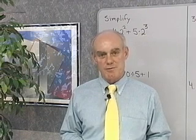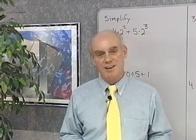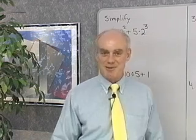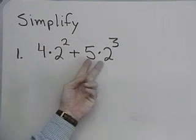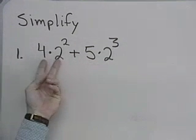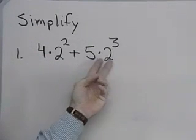What we're going to do now is look at some problems from section 1.1 of the text. Here's our first problem. We want to simplify the expression 4 times 2 squared plus 5 times 2 cubed.